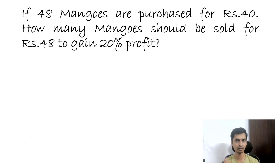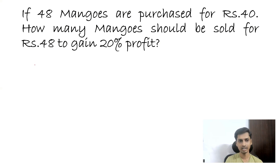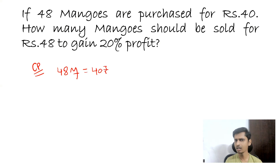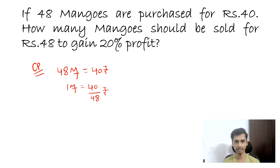So you purchased 48 mangoes for 40 rupees, and you want to find how many mangoes to sell per rupees 48 to get 20% profit. Cost price of 48 mangoes is equal to 40 rupees. Then what is the cost price of one mango? Cost price of one mango is 40 by 48 rupees. You can cancel it or leave it as it is.